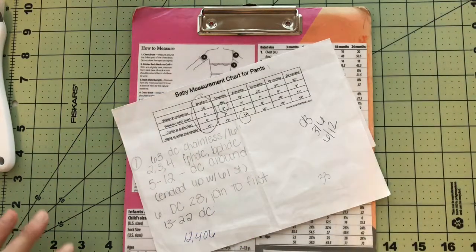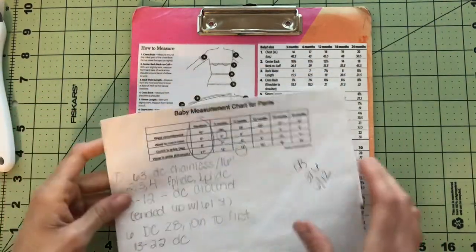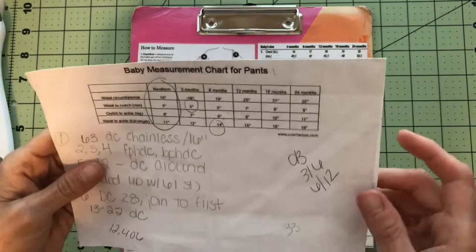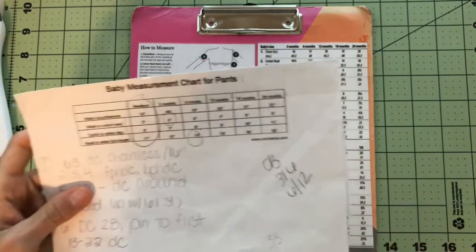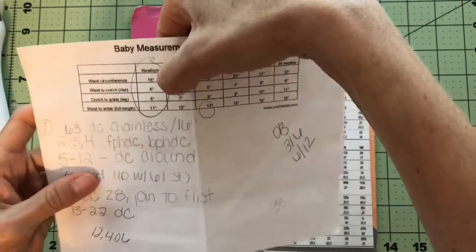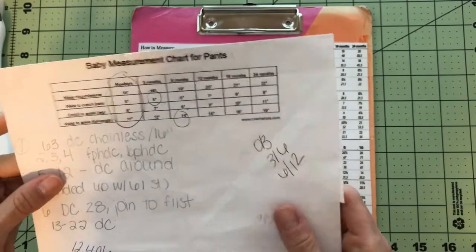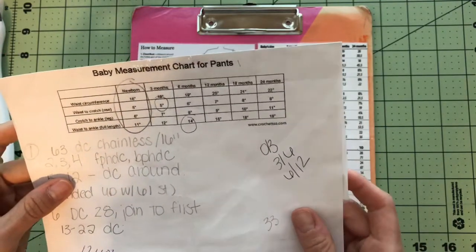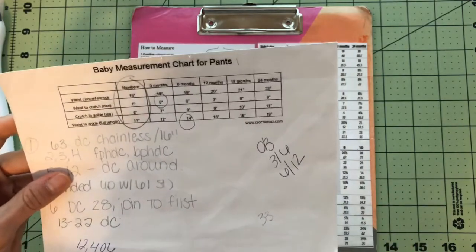The size dress we're making is going to be 0-3 months. I'm going to go to my size charts here and for 0-3 months, I'm going to go with a 3-month measurement so it fits up to 3 months. From the waist to crotch is 5 inches, and from the crotch to ankle is an additional 2 inches, so I'm going to aim to have the length be 6 inches.